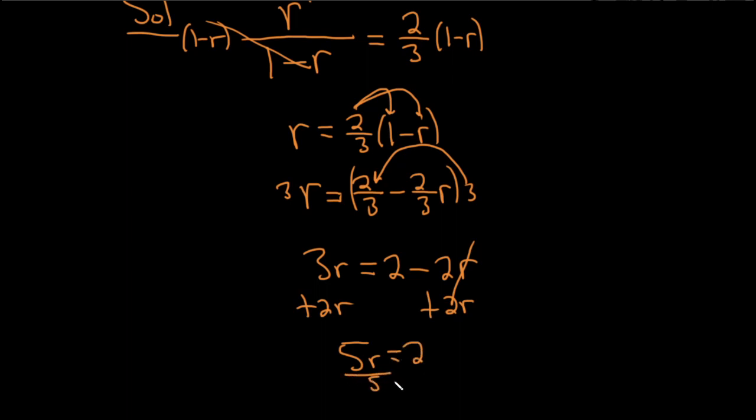And then to finish up, we just divide by 5, divide by 5. We end up with r equals 2 fifths, which agrees with what we suspected, right? r is a number less than 1 in absolute value.